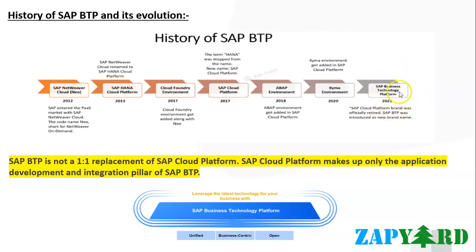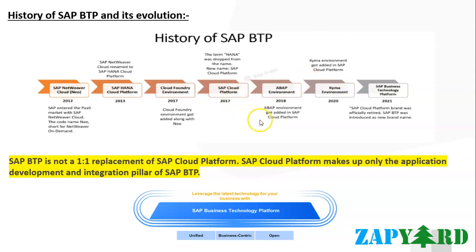Then in 2021, the SAP Cloud Platform brand was officially retired to support SAP's one-platform strategy, and SAP BTP was introduced as a new brand name. SAP BTP provides extended functionality; however, the core is still equivalent to what was formerly known as SAP Cloud Platform. Many of you would have heard about SAP Cloud Platform earlier, but now it's rebranded and renamed to SAP BTP — SAP Business Technology Platform.